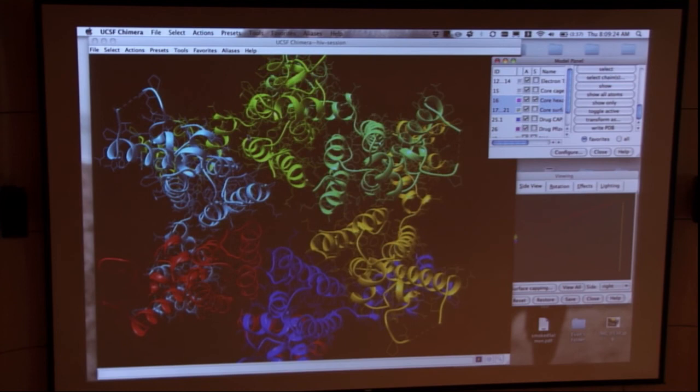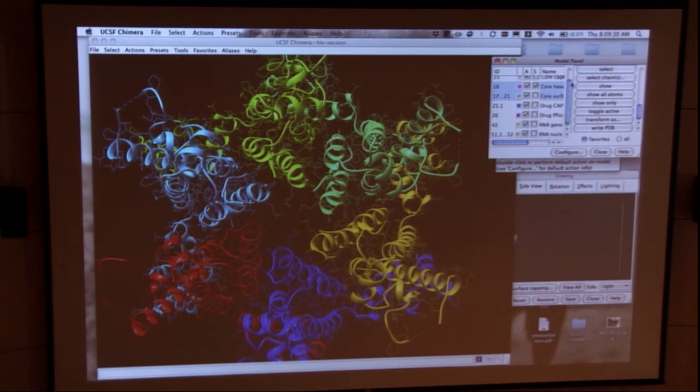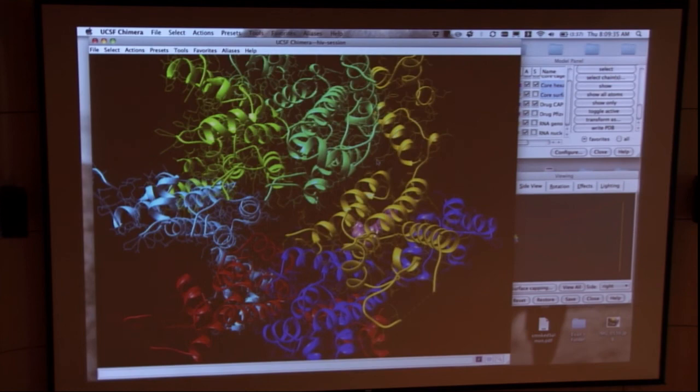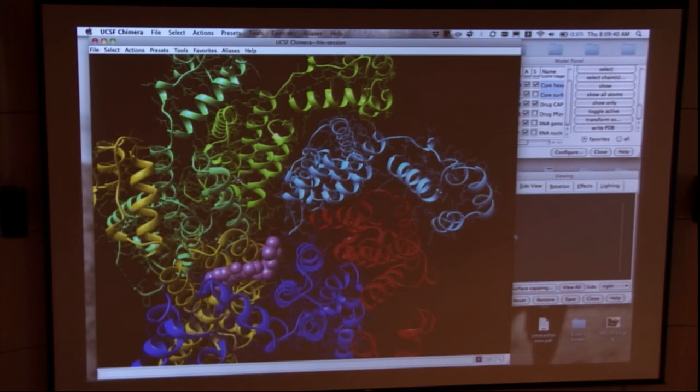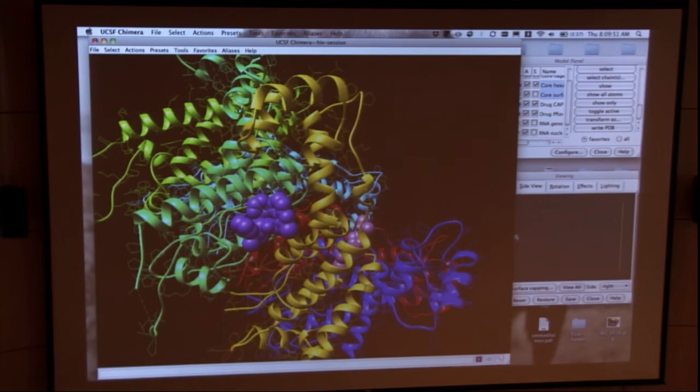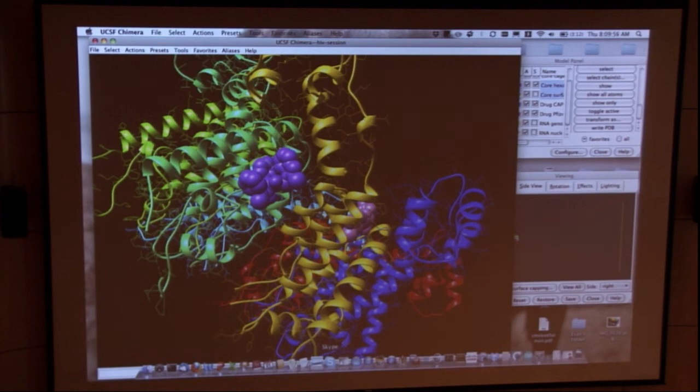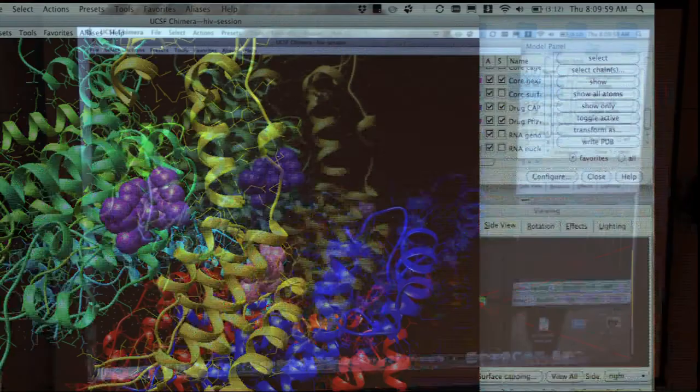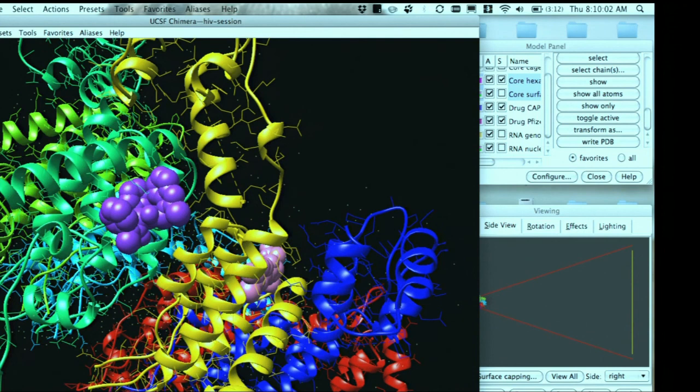We know there's a couple drugs, because this has been reported in the literature, that bind with HIV capsid and disrupt the formation of these multimeric units. Here's one of them from University of Maryland and another one from Pfizer, and it's interesting to see that these bind at the interfaces between copies of the protein. Neither of these drugs are in clinical use today, because although they disrupt the formation of the multimeric units in the laboratory, after about a week or two weeks' time, the virus mutates and the multimers are no longer inhibited.